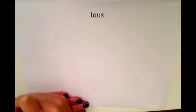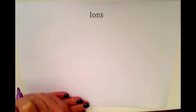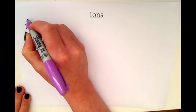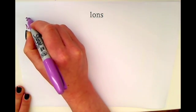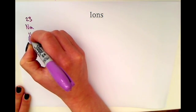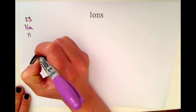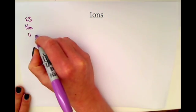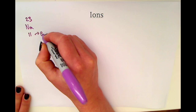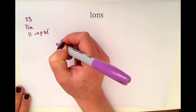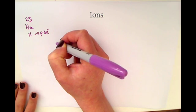Remembering back to drawing atoms - if you had an atom of sodium, for example, in the periodic table you would see Na for sodium, and that would have an atomic mass of 23 and a proton number of 11. The proton number tells us how many protons and electrons there are, and it allows us to draw the structure of the atom.